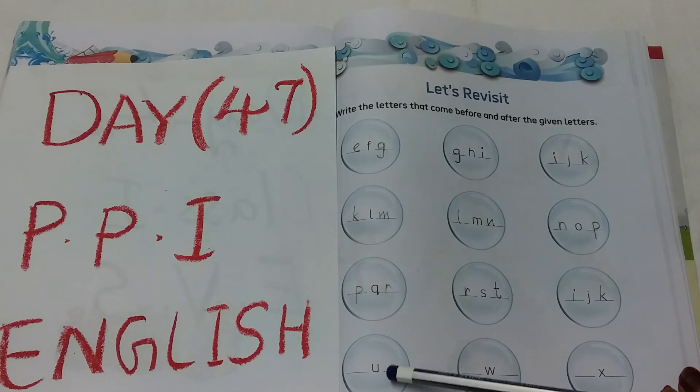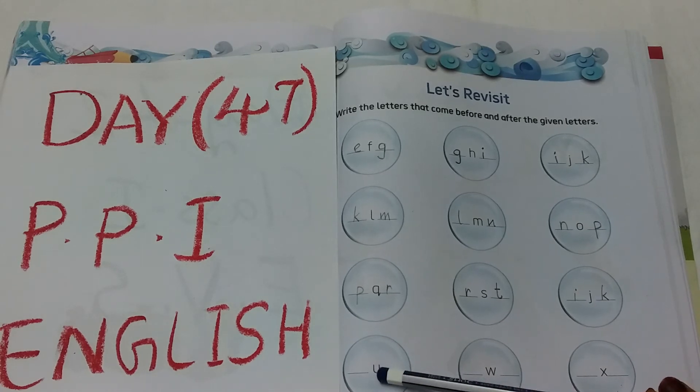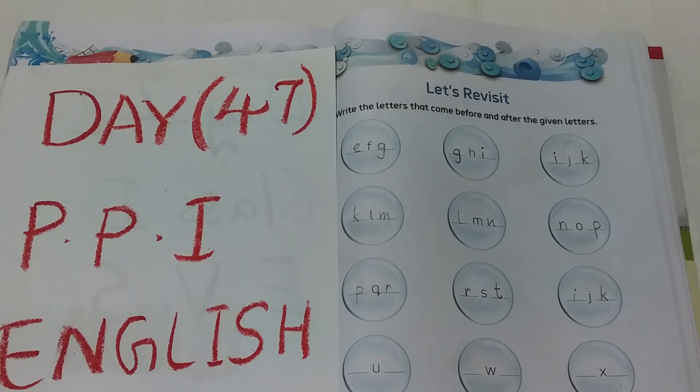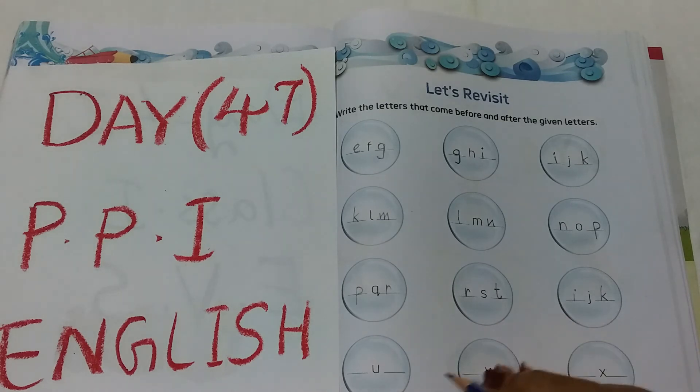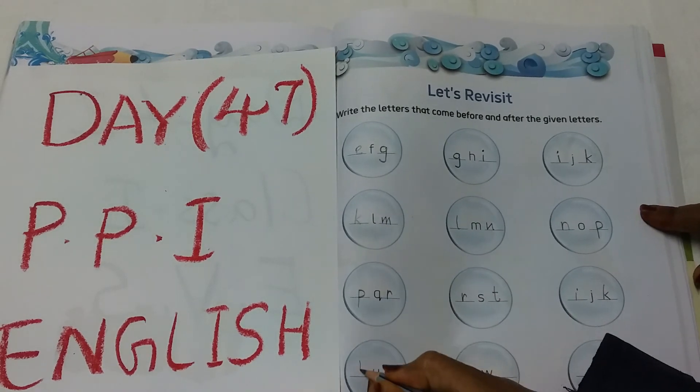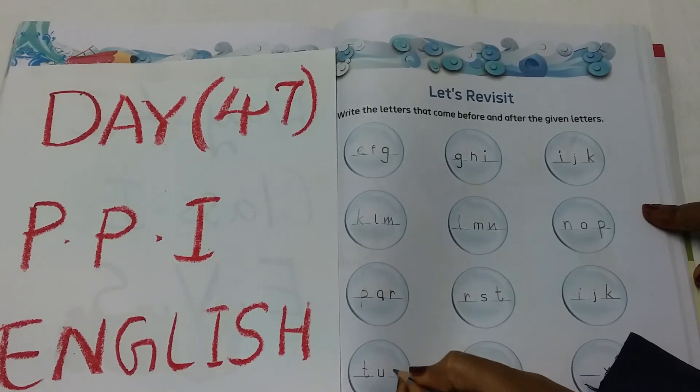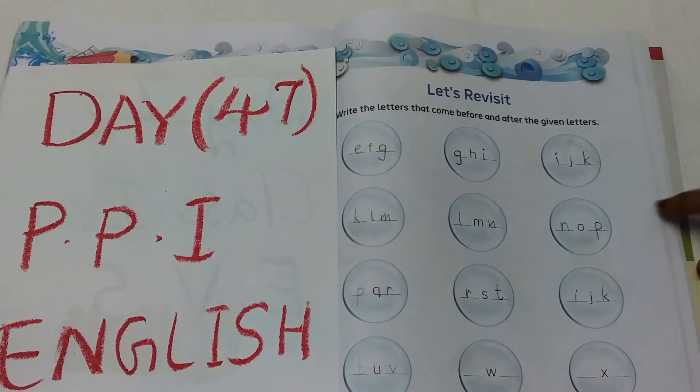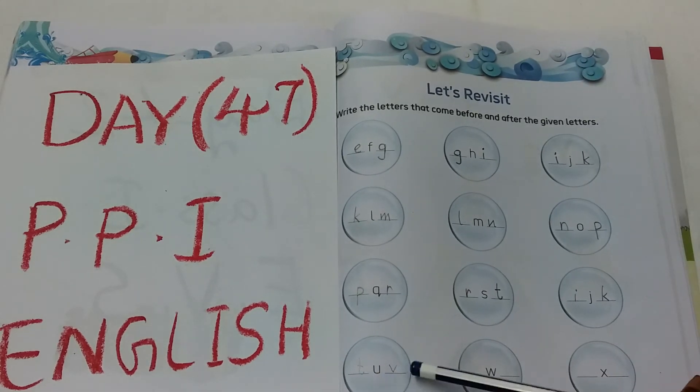Now see the next circle. Letter U. U before T. T, U, V.